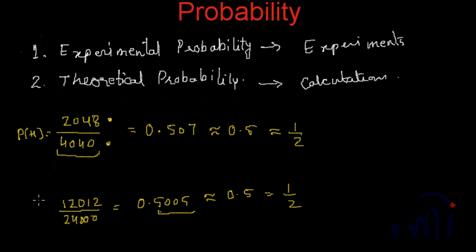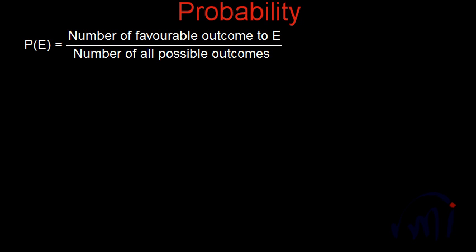If the number of experiments are increased, the probability actually gets closer and closer to the probability which you get using calculation, which is theoretical probability. And sometimes the cost of doing an experiment is very high, so theoretical probability is actually preferred over experimental probability. It's better to learn to calculate the theoretical probability. This is the formula: the probability of happening any event E is equal to the number of favorable outcomes to E divided by the number of all possible outcomes. If we can learn to calculate the number of favorable incidents and total number of incidents, we can calculate the probability for any event. So keep watching MathSmart and bye-bye till then.